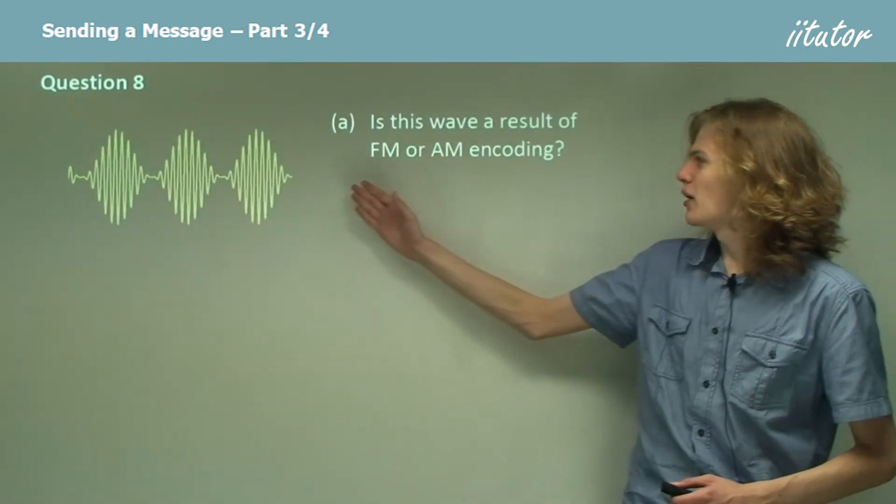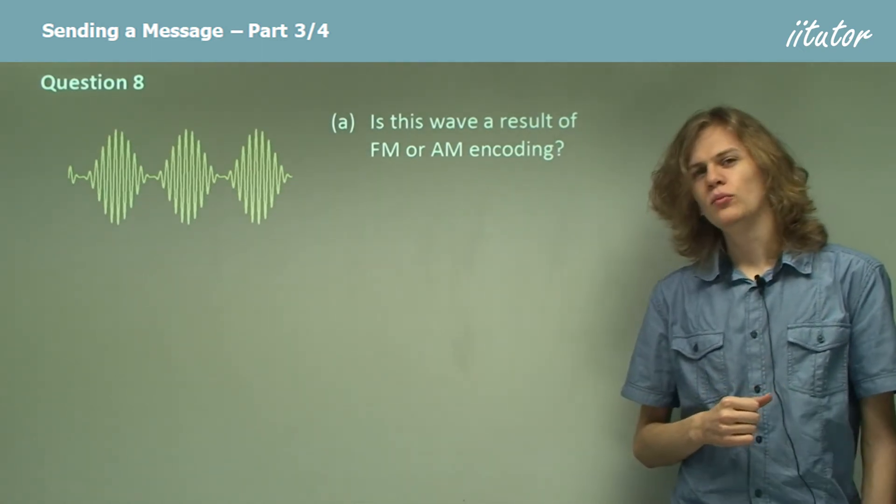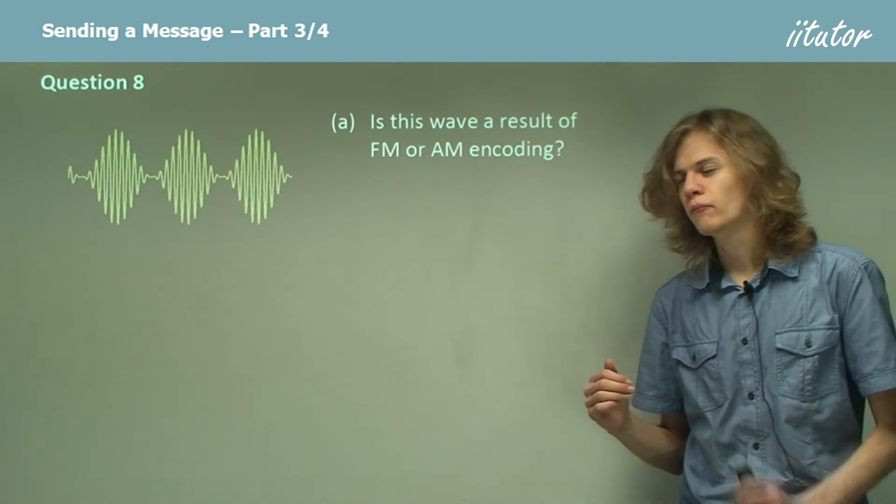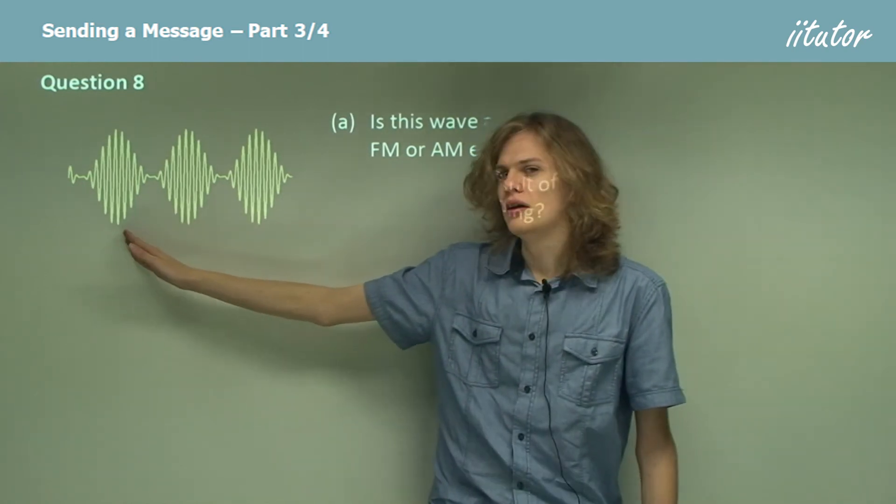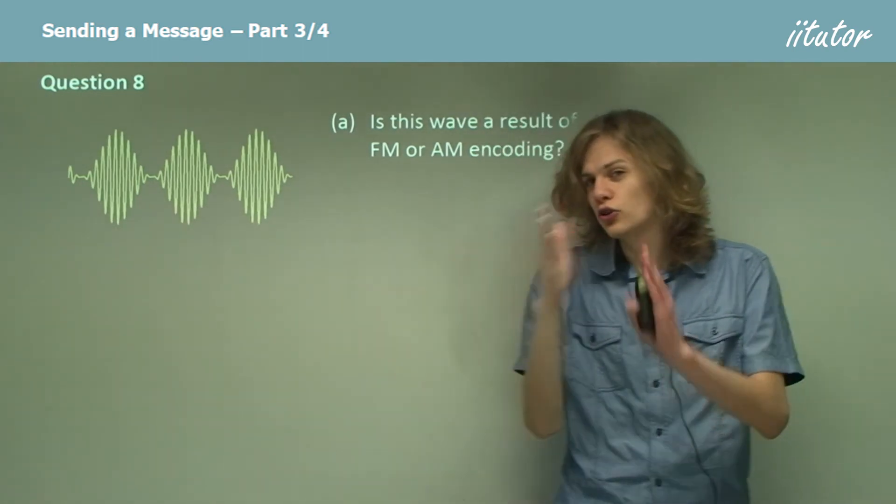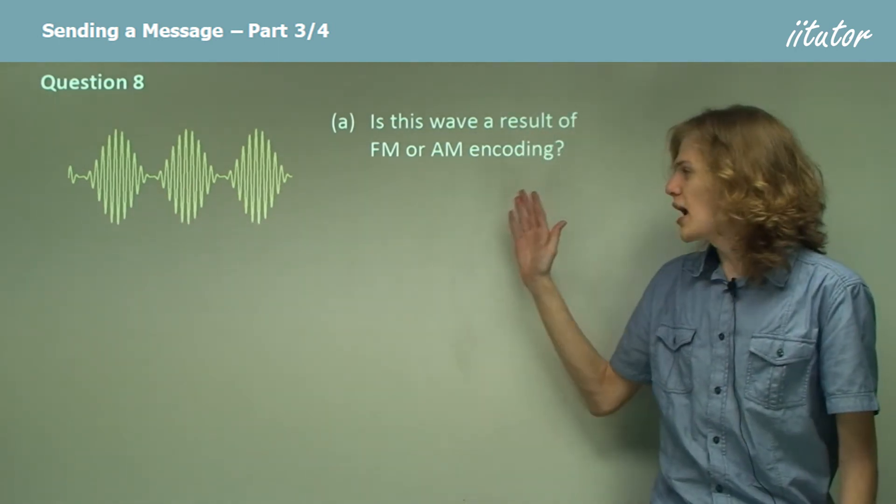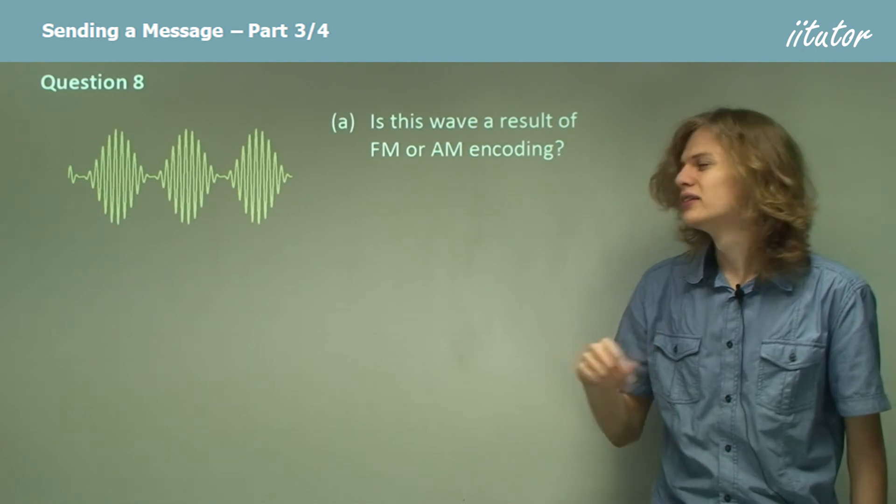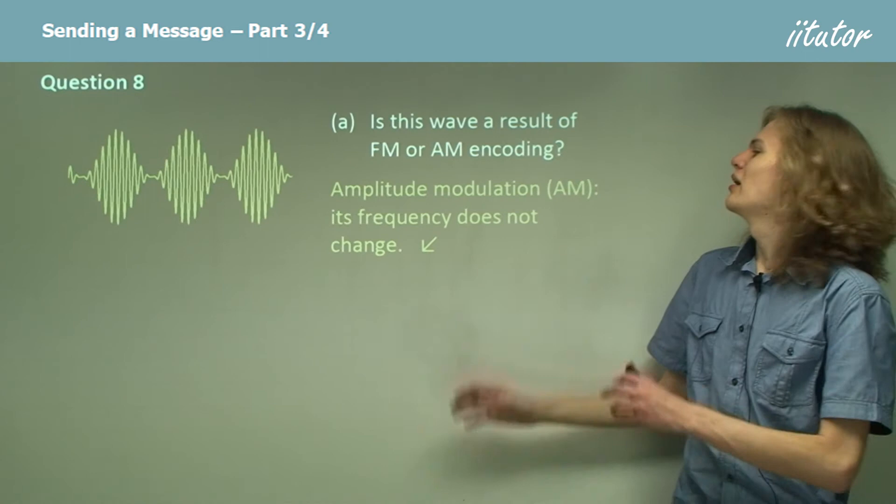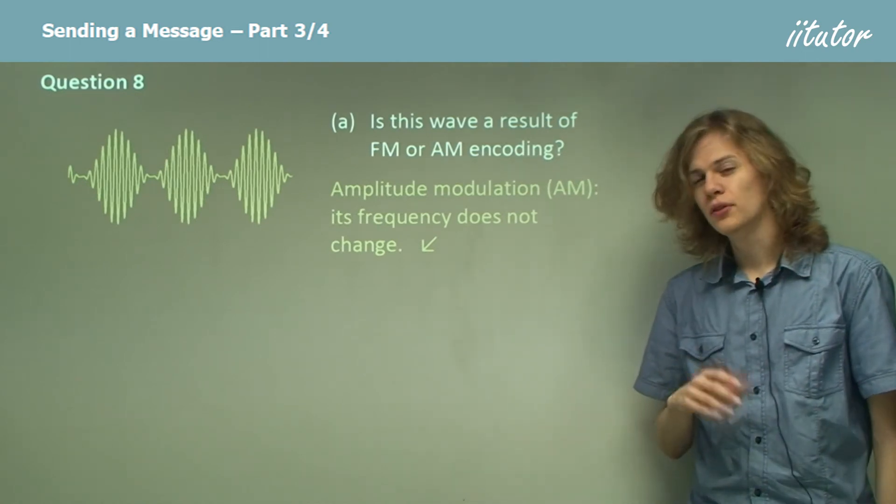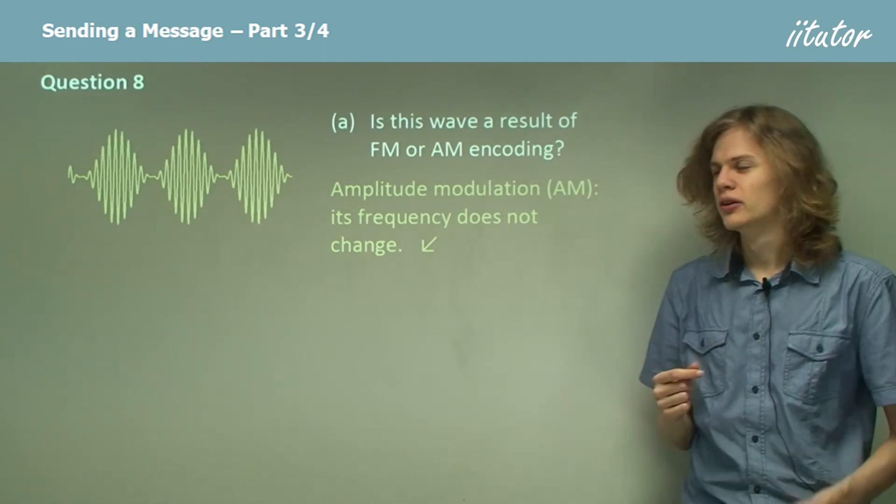Is this wave a result of FM or AM encoding? So to find out, we need to figure out what changes. Does the frequency change? No, the carrier wave, that is the wave with a very very small wavelength, is always the same distance apart. Does the amplitude change? Yes, there's a big variation in amplitude all over. So it is amplitude modulation.